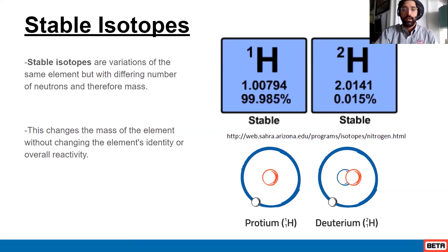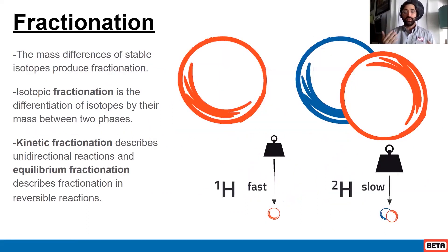Now what fractionation does and what fractionation represents is the differentiation of these isotopes between two phases. We have kinetic fractionation that describes unidirectional reactions, then equilibrium fractionation, which would be a glass of water again but capped.